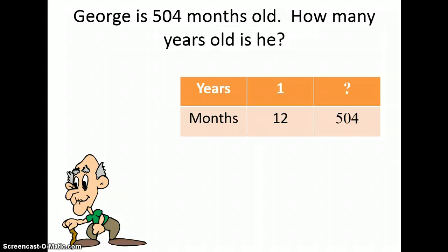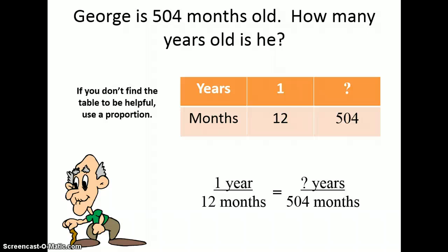Now, looking at the table, it might be difficult for me to solve this problem, because I don't know, on the top of my head, what I need to multiply 12 by to get to 504. And it might not end up being a whole number that I need to multiply. So let's try setting up a proportion instead.